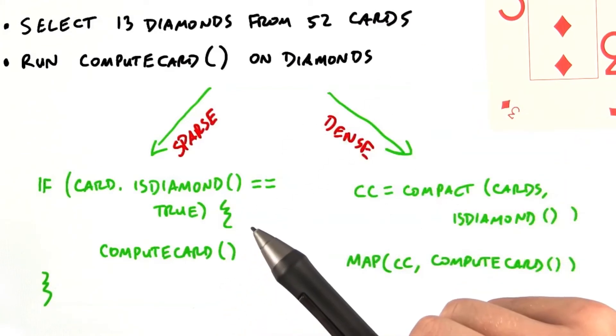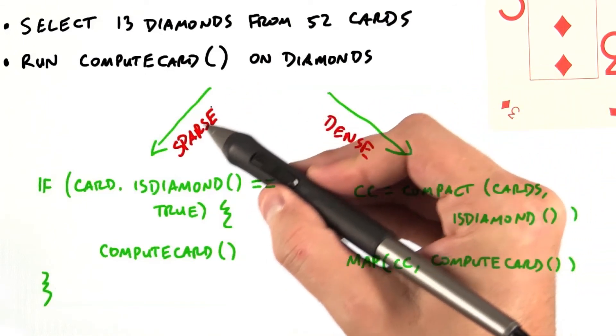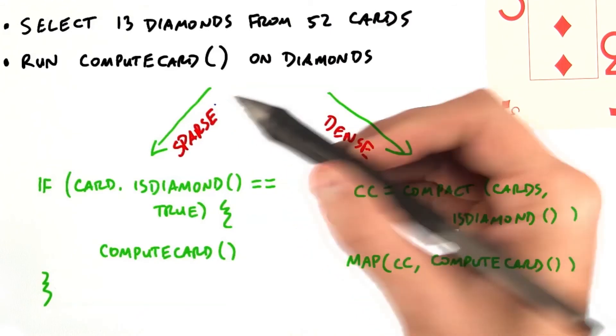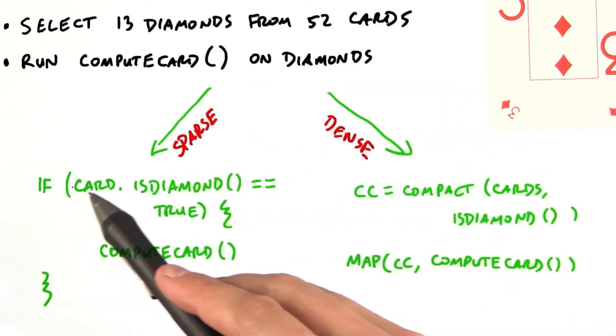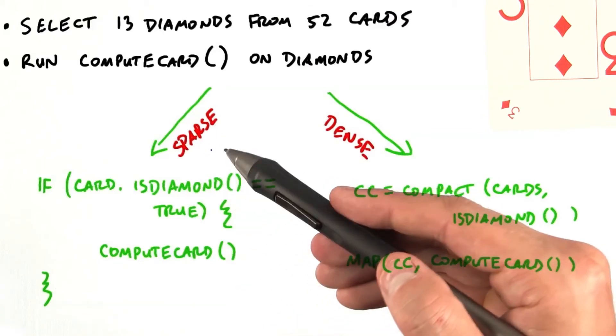We could structure this code in one of two ways. We could either wrap our computation in a big if clause. So what we're doing here is on each card we check if it's a diamond, and if it is a diamond, then we run compute card. Otherwise, we do nothing. This is the sparse approach.